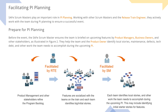Today's topic is facilitating PI planning, which is one of the primary responsibilities of a SAFe Scrum Master. SAFe Scrum Masters play an important role in PI planning, working with other Scrum Masters and the Release Train Engineer. They actively work with the team during PI planning to ensure a successful event.